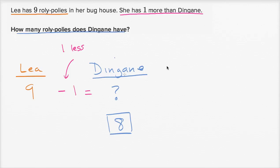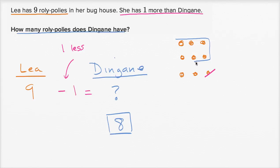Another way you could have done it: you could have drawn Leah's roly-polies — one, two, three, four, five, six, seven, eight, nine — and that would have been them rolled up. And you'd say, okay, that's one more than Dingane. So Dingane has one less than this. You just take away one of these, and you're left with one, two, three, four, five, six, seven, eight — you're left with eight right over there.